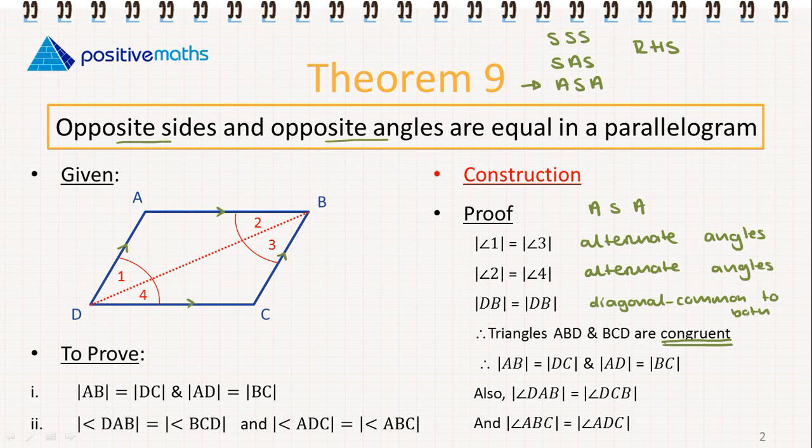Also, angle ADB is equal to angle DCB, and angle ABC is equal to angle ADC.